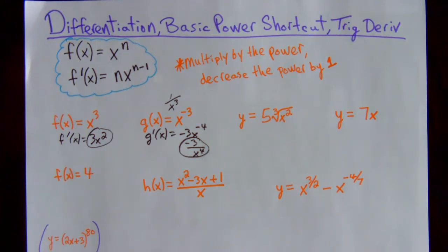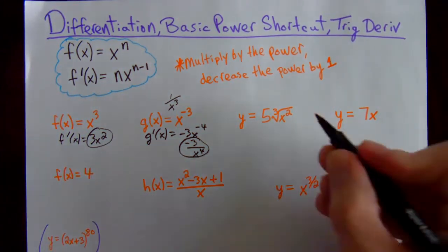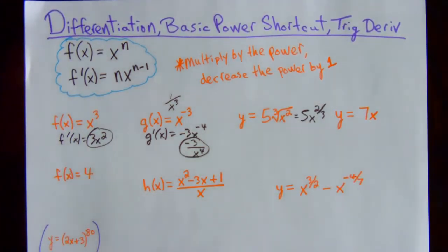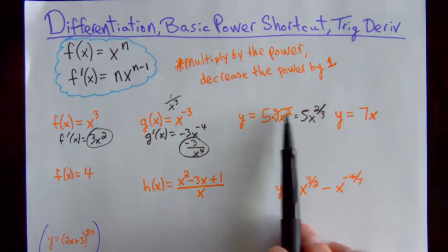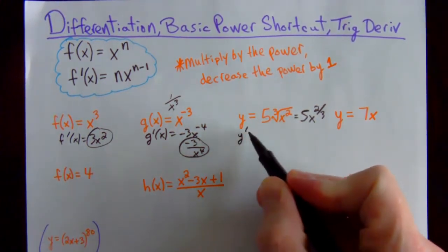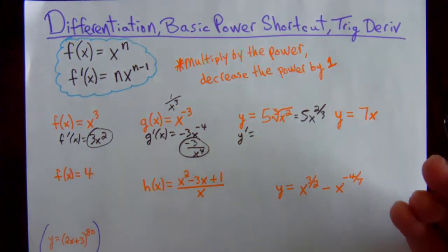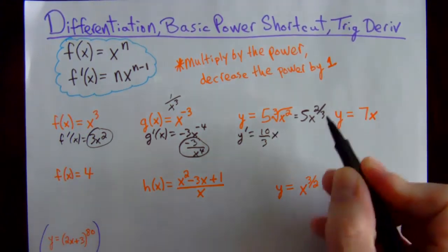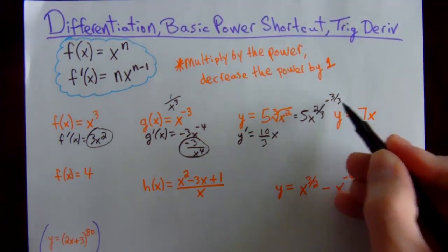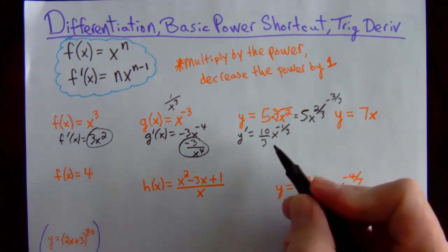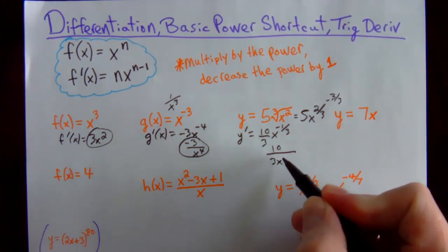If it doesn't look like x raised to a power, sometimes you can do algebra to change it. For example, rewrite it as 5x to the two-thirds — be careful, the inside number goes on top and the outside number goes on the bottom. When you have a constant outside and take the derivative, multiply the two-thirds by the 5 to get 10 over 3, then decrease that power by 1. Subtracting 1 means subtracting 3 over 3, giving x to the negative one-third, and then get rid of that negative exponent.